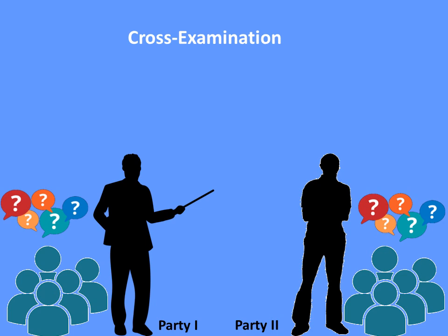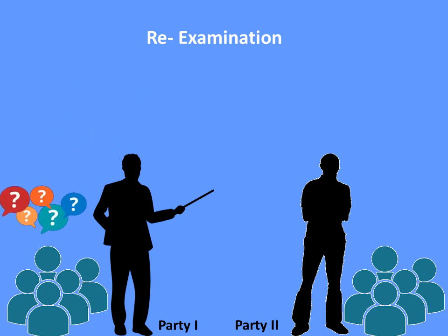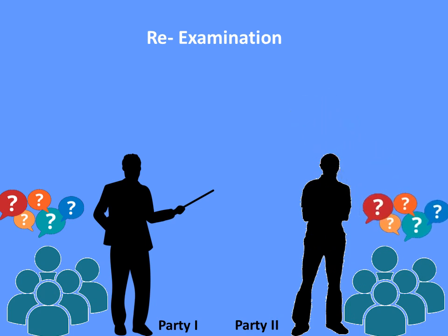After all the damage done by cross-examination, one chance is given to restore the story — this is re-examination. Party One again calls his witnesses and tries to mitigate the damage done by the opposite party. Similarly, Party Two starts asking questions to his own witnesses to restore the story to the court. This is how things function in the open court.